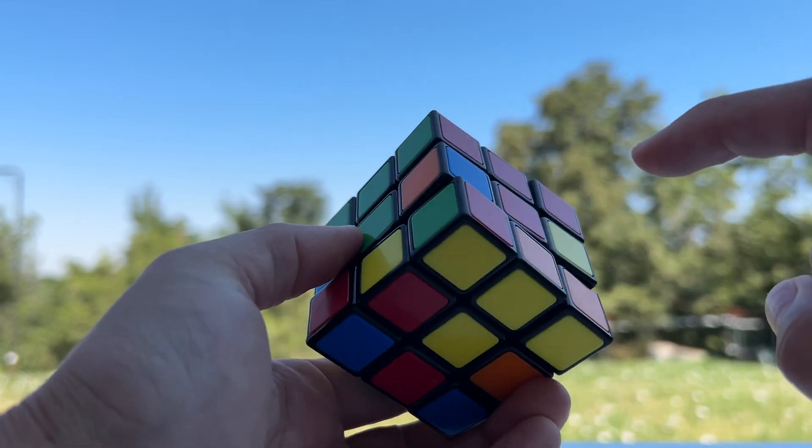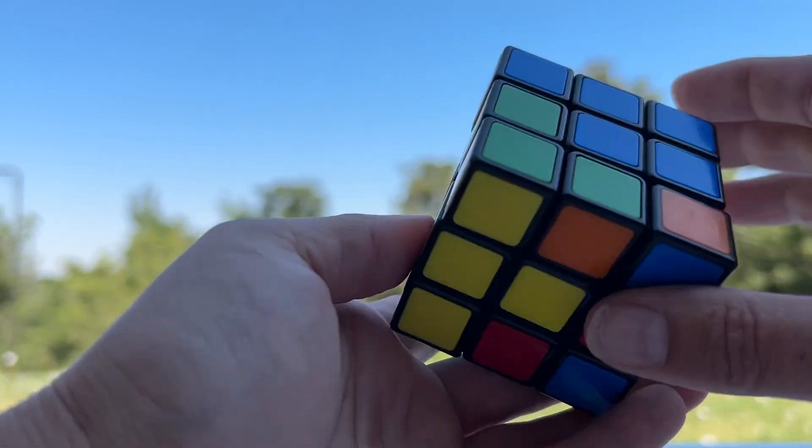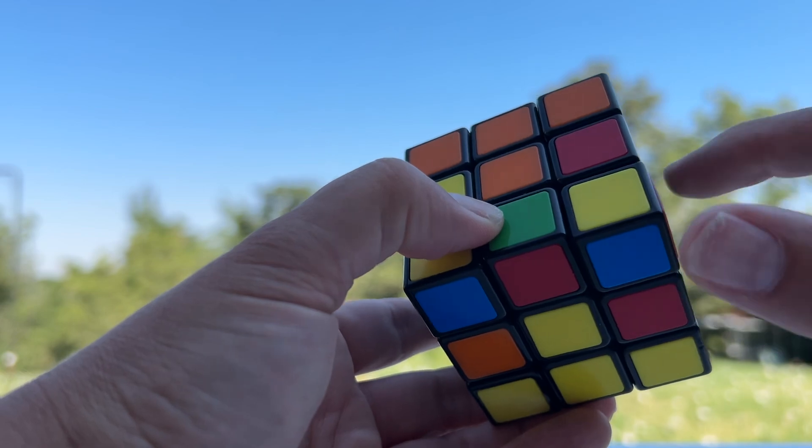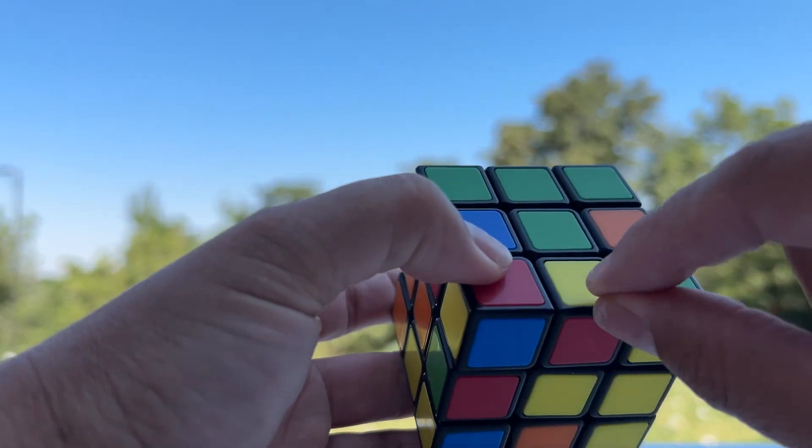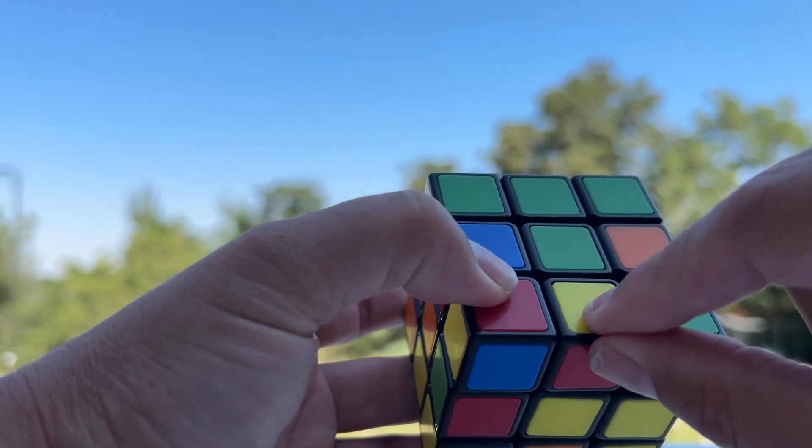We need the green and the red, the red and the blue, the blue and the orange, and the orange and the green. So I'm looking down here on this layer for one that is not yellow.